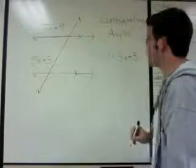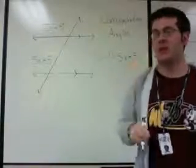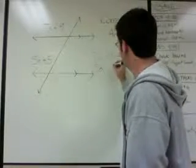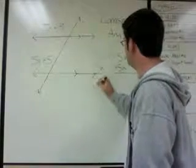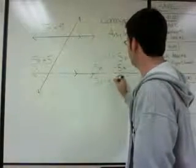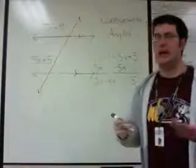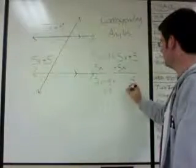Now we just have to use some algebra to solve for x and we've solved this problem. Let's subtract 5x off both sides first. Minus 5x minus 5x. 2x minus 9 equals 5. And then we just have to add 9 to both sides. Plus 9 plus 9.